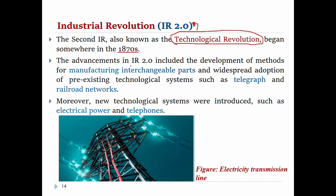The advancements in Industrial Revolution 2 include development of methods, manufacturing, and interchangeable parts.